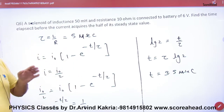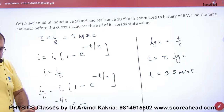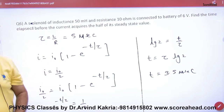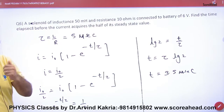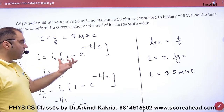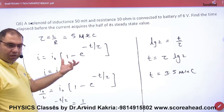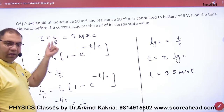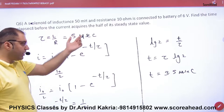When the battery connects, the growth of current occurs. In the growth formula, the time constant τ (tau) is L/R — that is the answer for τ.